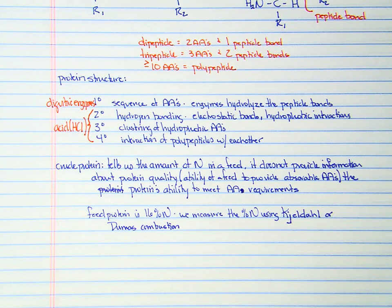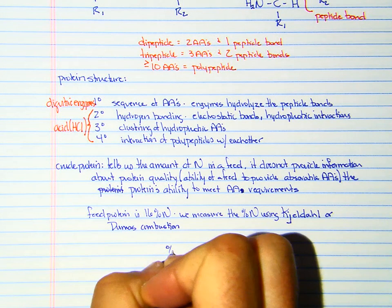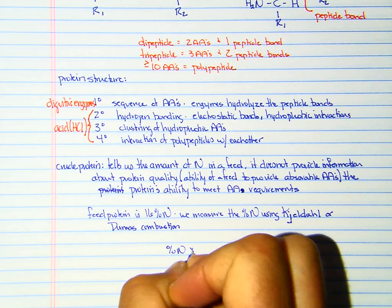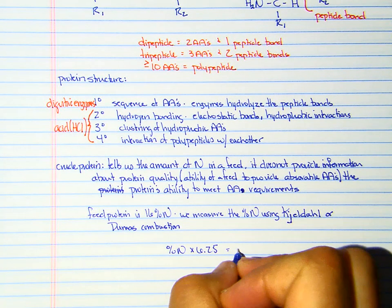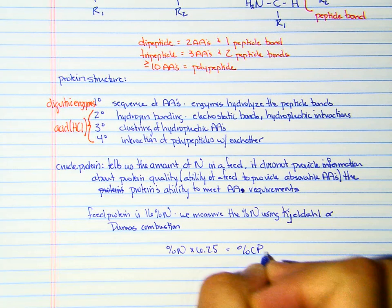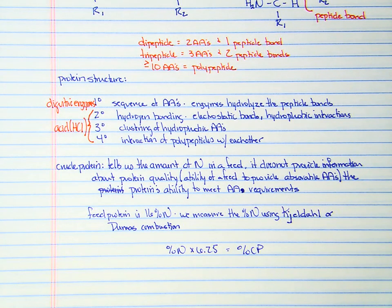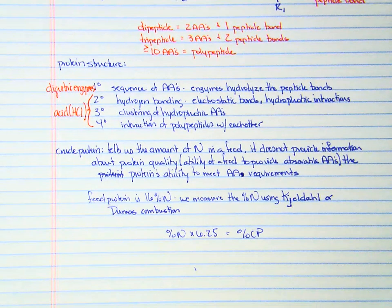After we've done either a Kjeldahl or a Dumas combustion, we know the percent nitrogen. We multiply that percent nitrogen by 6.25 to give us the percent crude protein. If you're wondering where the 6.25 came from, the 6.25 is the inverse of 16%. One divided by 16 should give you 6.25.